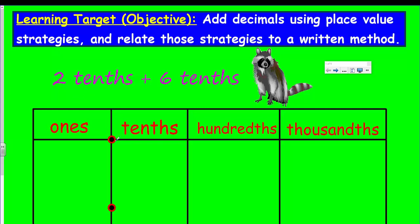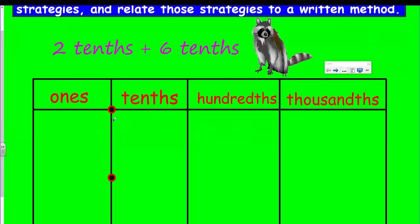So, what do we have here? It says here we have 2 tenths plus 6 tenths. Now, we can use this by creating these little disks on our place value chart. The 2 tenths plus 6 tenths is 8 tenths. Seems kind of simple, doesn't it? Very similar to whole numbers when you think about it — you have 2 and you have 6, and that would be 8.